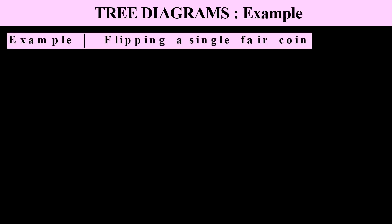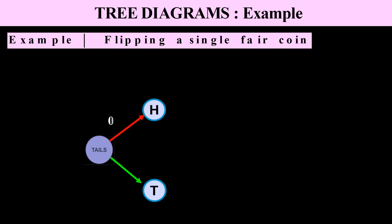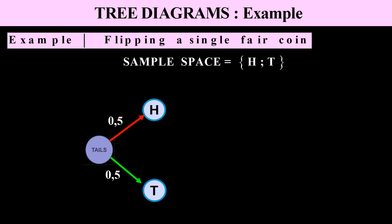Let's consider a very simple tree diagram — the event of flipping a single fair coin. The coin can either land heads or tails, and it's equally likely with 50% or 0.5. The sample space is just heads or tails, the probability of a head is 0.5, and the probability of a tail is 0.5. Very simple tree diagram.